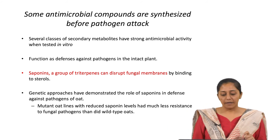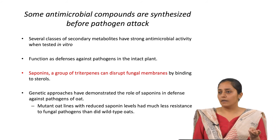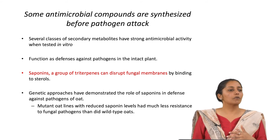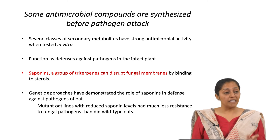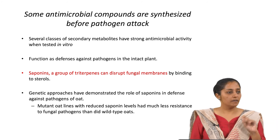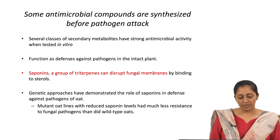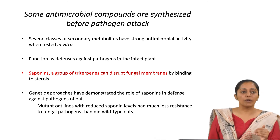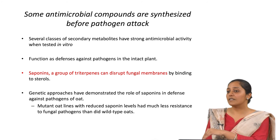Several classes of secondary metabolites have strong antimicrobial activity, since most plant pathogens include fungi and bacteria. Saponins are a group of triterpenes that disrupt fungal membranes by binding to sterols in the phospholipid membranes. Genetic experiments demonstrated this: oat cell lines mutated to reduce saponin production became more susceptible to fungal attack than lines with higher saponin amounts.